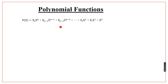So the degree of a polynomial is the highest power of x in its expression. When finding the degree of a polynomial function, we select from the expression the term with the highest power of x.